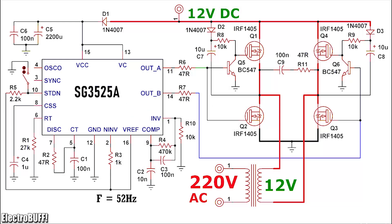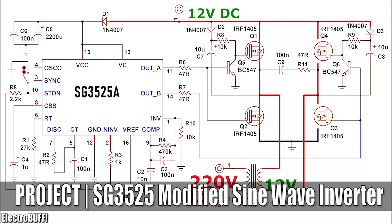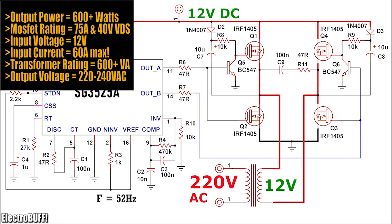Hi, today I'll show you how to make a 12V to 220V DC to AC inverter which can give you a power output of more than 600W.